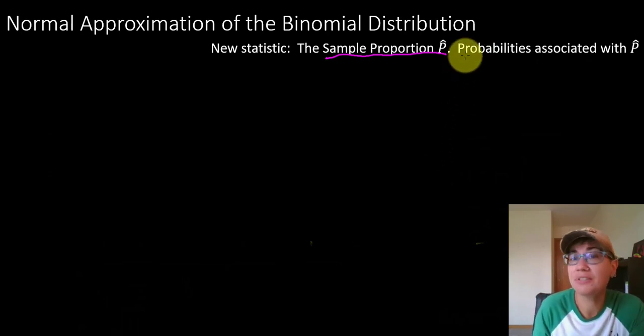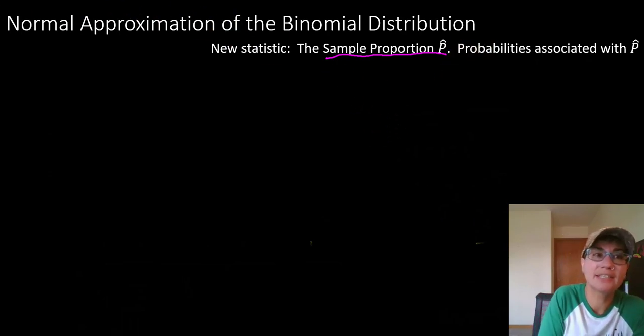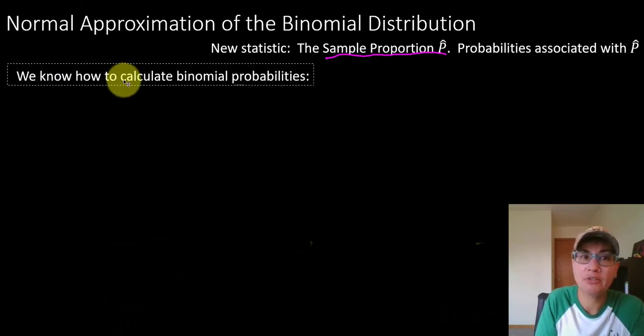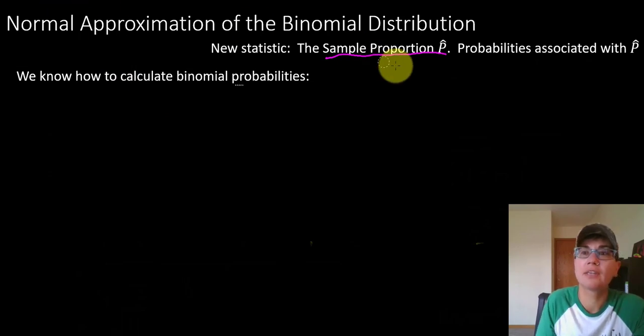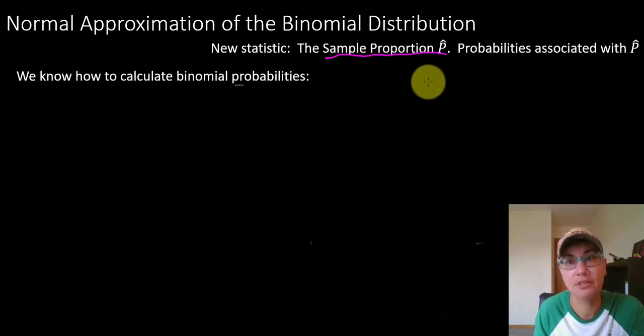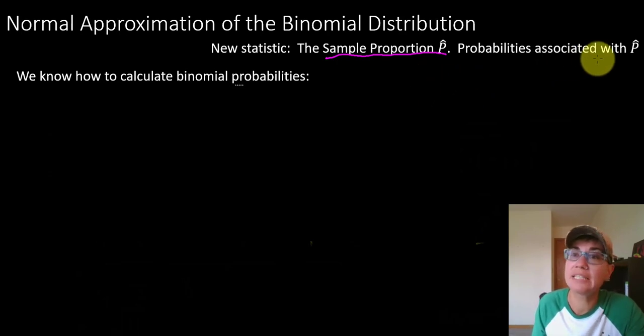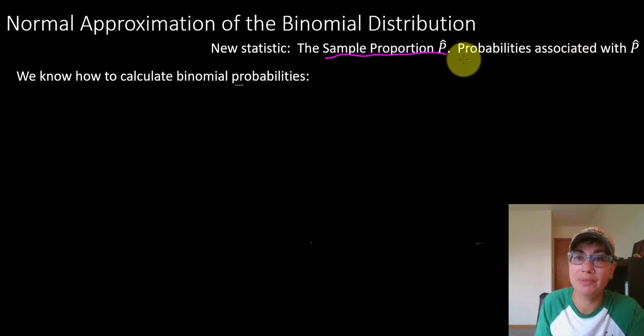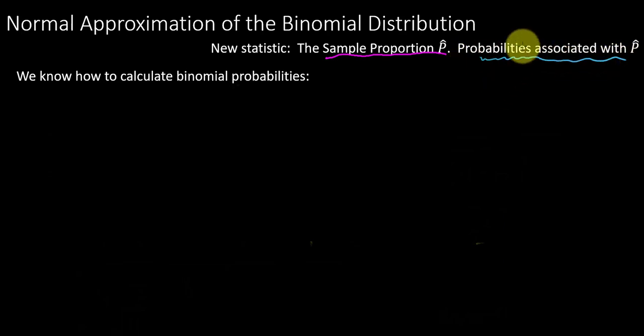We know how to find probabilities with binomial variables. We have that binomial formula, but we're going to make this leap to sample proportions and we'll see how we find probabilities with these sample proportions. In about 15 minutes we're going to talk about how we can accomplish this, and we'll have to talk about a new type of sampling distribution.